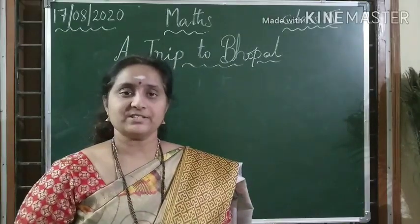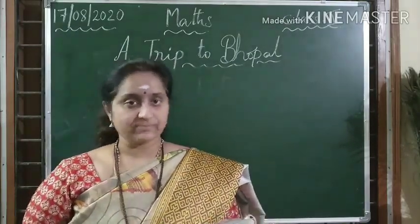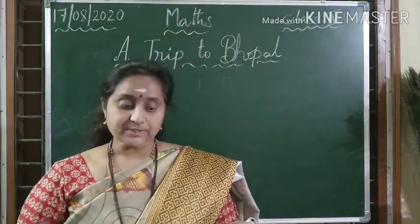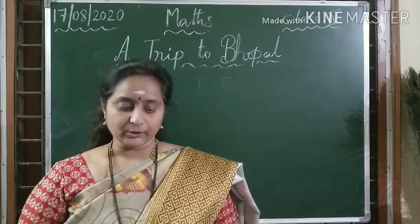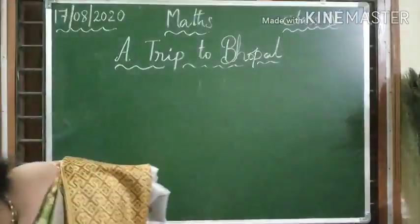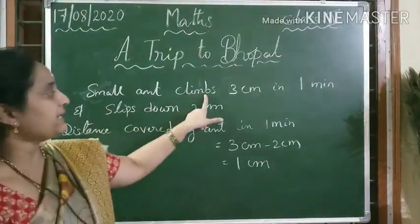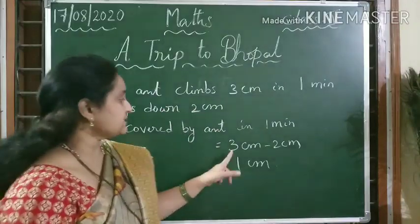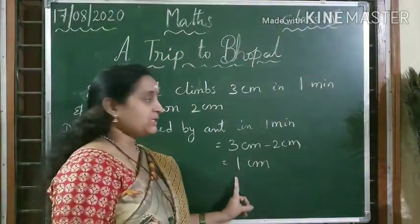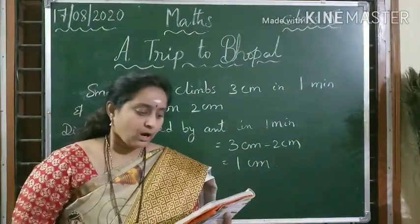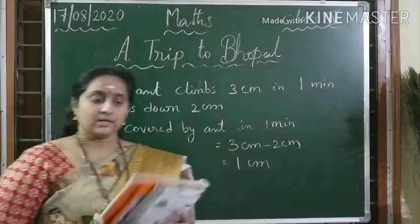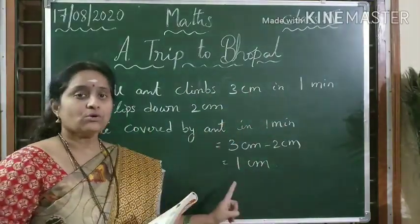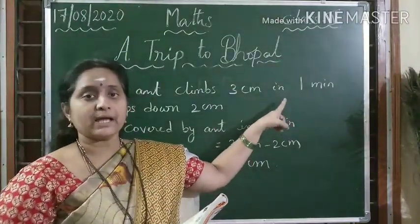Let us see one more puzzle. A small ant climbs 3 centimeters in 1 minute but slips down 2 centimeters. How much time will it take to climb 2 centimeters? The distance covered by the ant per minute is 3 minus 2, which is nothing but 1 centimeter. To climb 1 centimeter it takes 1 minute. So to climb 2 centimeters, the time taken by the ant is 2 minutes.